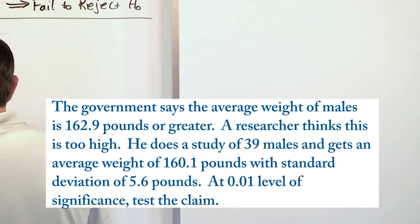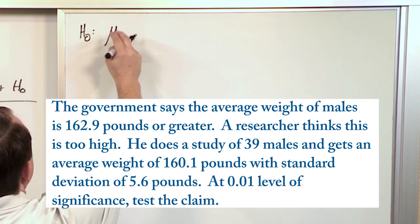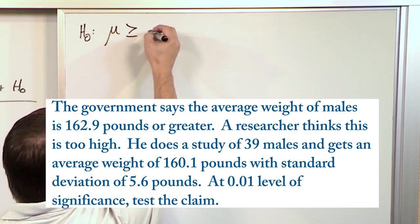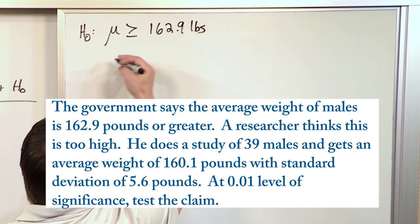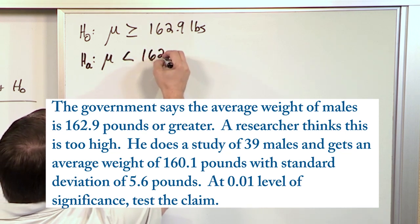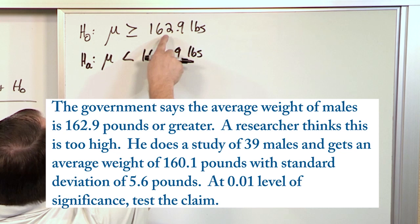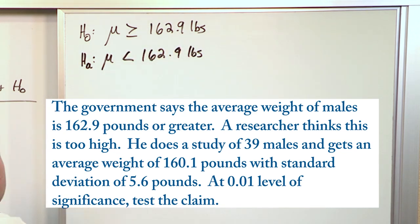So the first step is let's write down the null hypothesis. It is a mean, the average weight, and the government says that it's greater than or equal to 162.9 pounds, and so therefore the alternate must be the opposite of this, less than 162.9 pounds. So greater than or equal to this, less than that. These are opposites of one another.